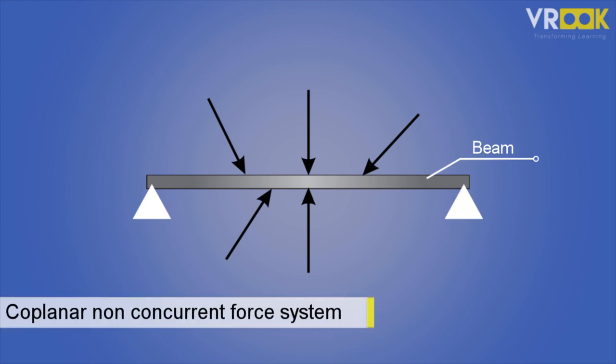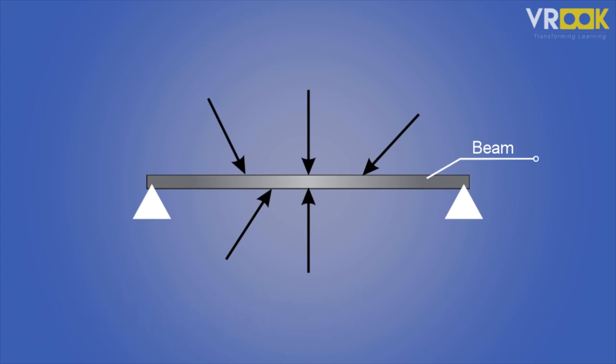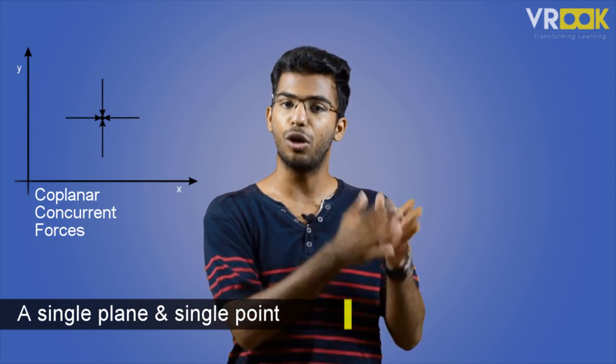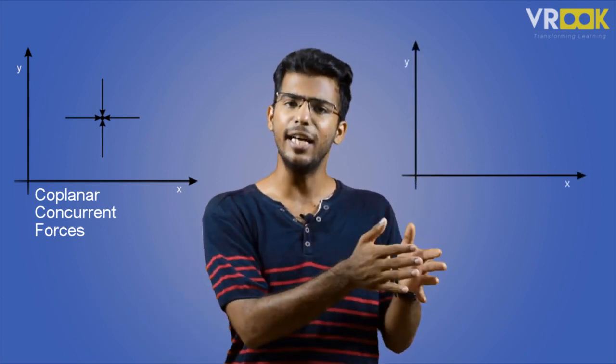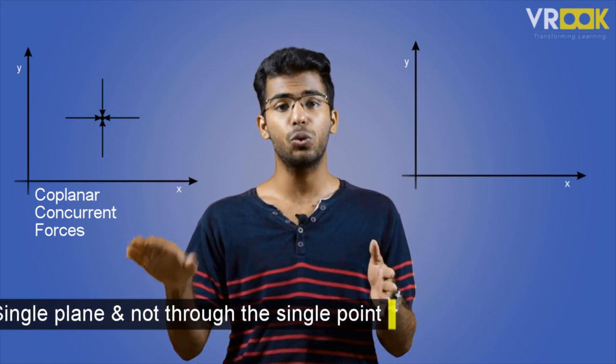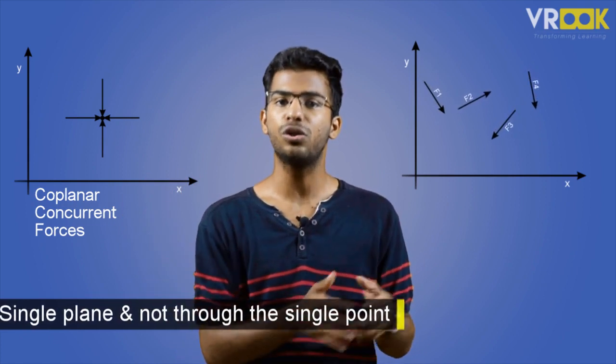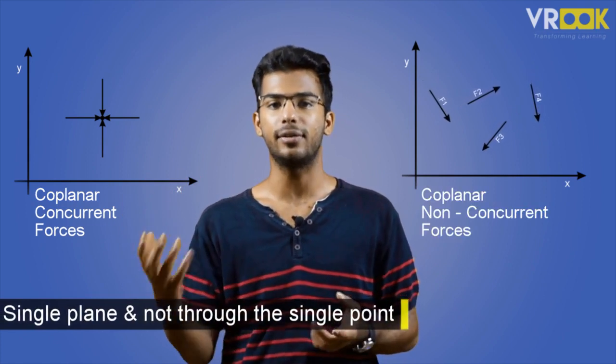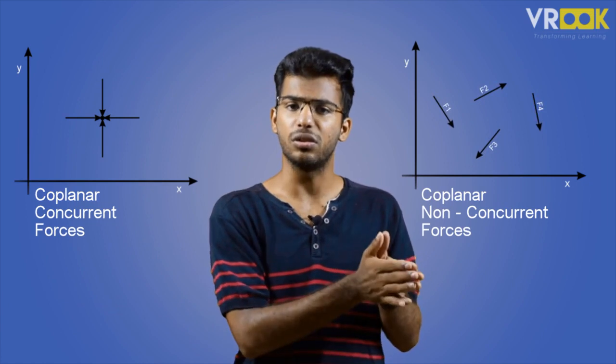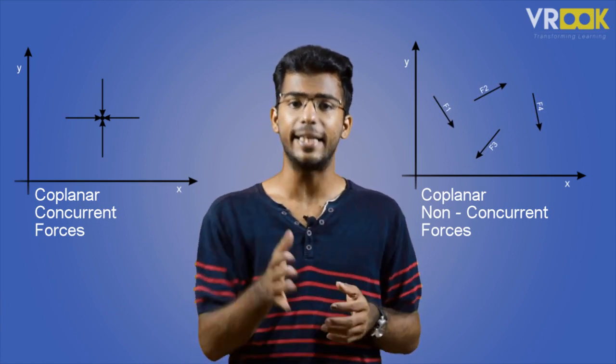Forces are in a single plane but they do not meet at a single point. There is a simple difference: if the forces pass through a single point, it is a concurrent force system; if they don't, it is non-concurrent. So a single plane with forces passing through a single point gives a coplanar concurrent system, and a single plane where forces do not pass through a single point gives a coplanar non-concurrent system.